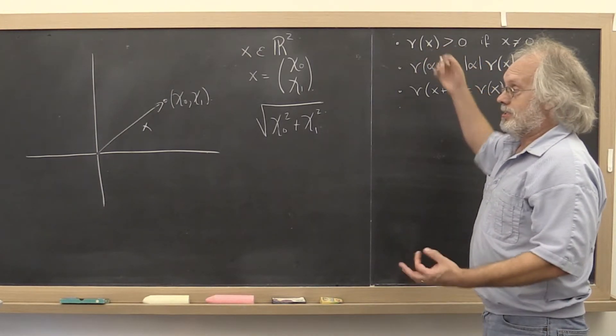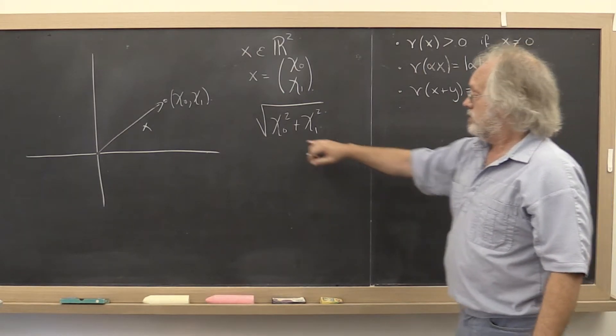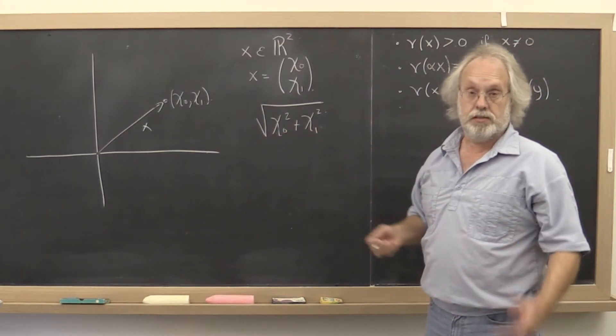Otherwise, that distance is greater than zero. Why? Because the square root of the sum of squares is positive.